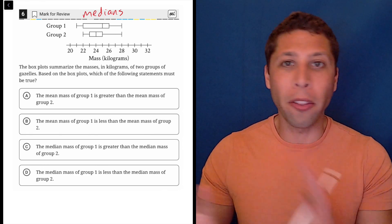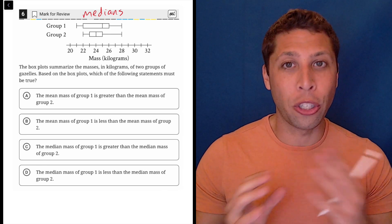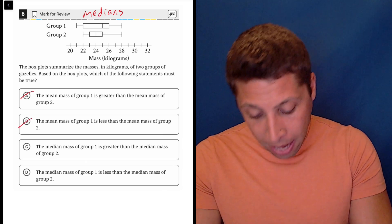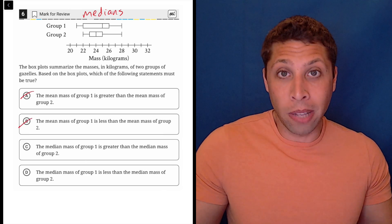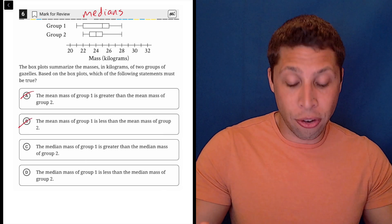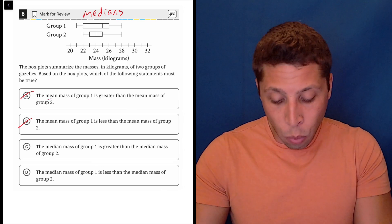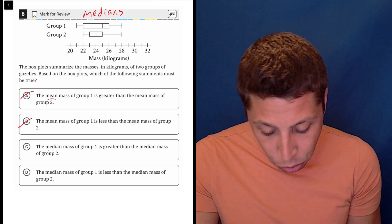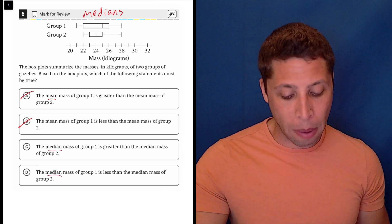Means are important for other reasons, but if we see box plots, we can really only talk about the median, and that's going to get rid of A and B. We don't associate the word mean with the idea of a box plot. So this is just going to get us down to C and D, which use the right vocabulary talking about medians.